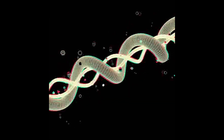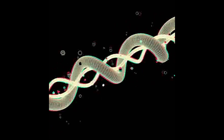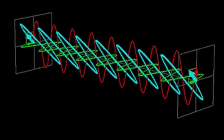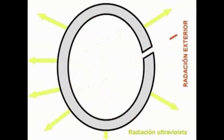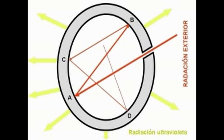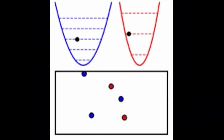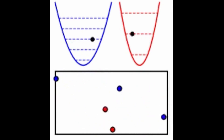Complexity entropy is the extension of entropy to systems that exhibit complex behavior, such as self-organization, emergence, adaptation, and evolution. It was developed by various researchers in the 20th and 21st centuries, who applied it to study the structure, dynamics, and patterns of natural and artificial systems, such as biological organisms, ecological networks, social systems, and computer simulations. Complexity entropy is a measure of the diversity, richness, and novelty of a system, as well as its ability to generate and process information.